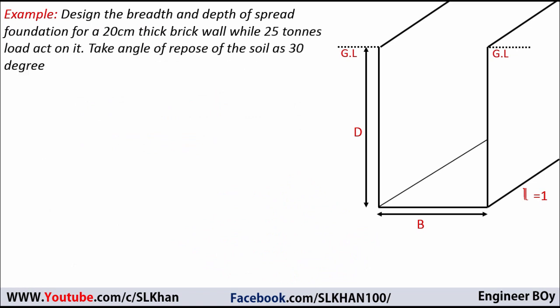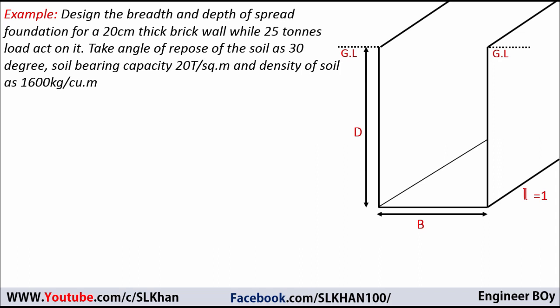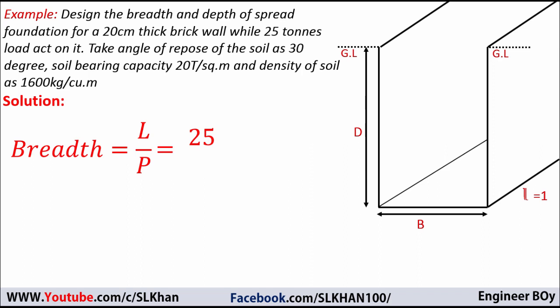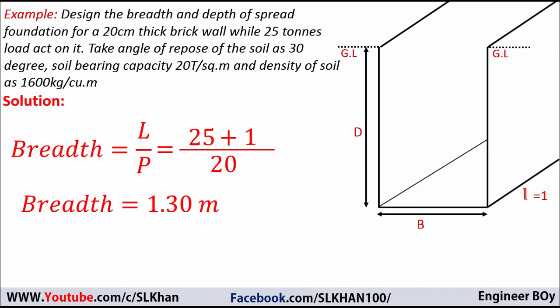Now let's solve an example: design the breadth and depth of foundation for a 20 cm thick brick wall with the given data. First, I'll calculate the breadth of foundation using B equals L divided by P. The external load L is 25 tons, and I'll assume the self-weight is 1 ton, so total L equals 26 tons. P is 20 tons per square meter. So B equals 26 divided by 20, which gives 1.30 meters.